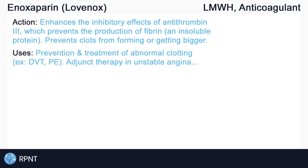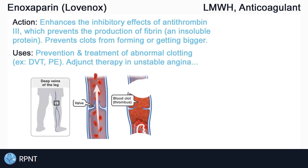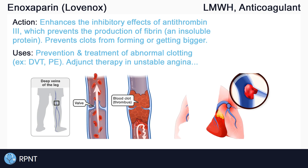Enoxaparin is used for the prevention and treatment of various abnormal blood clots. Uses include prevention of deep vein thrombosis and pulmonary embolism. Enoxaparin can also be used as an adjunct therapy in unstable angina, and has other uses as well.